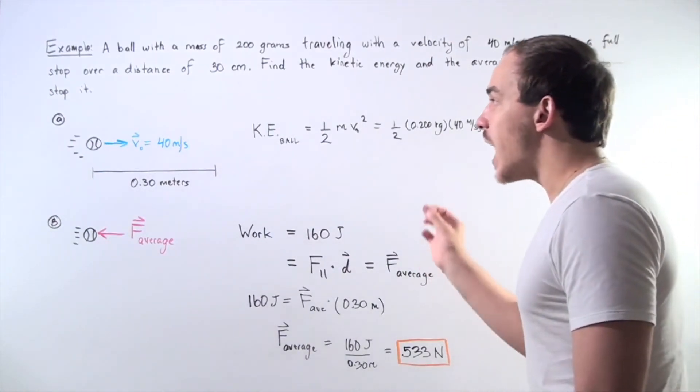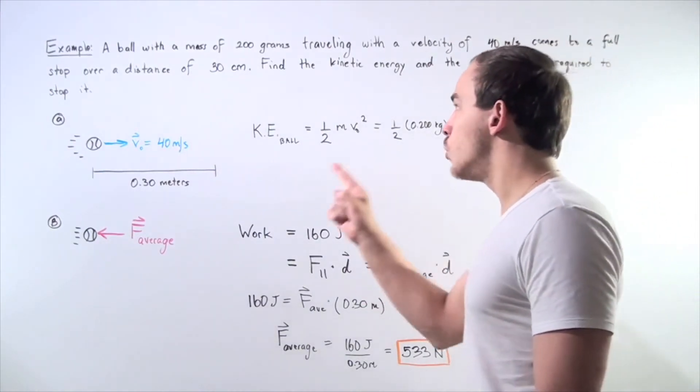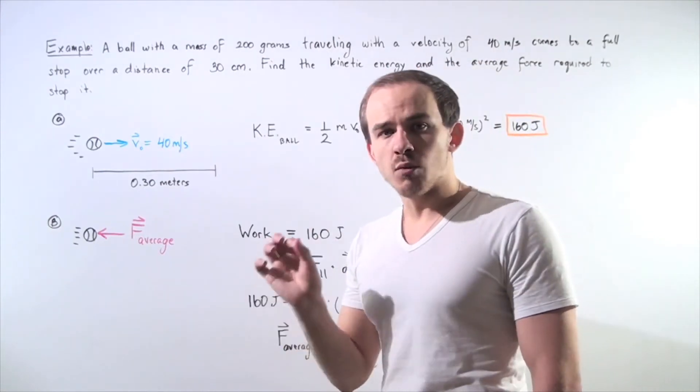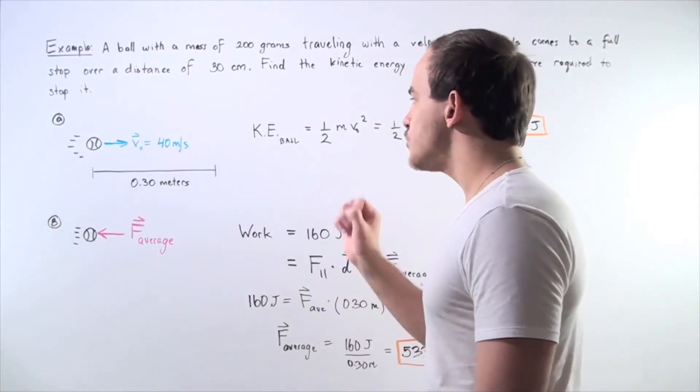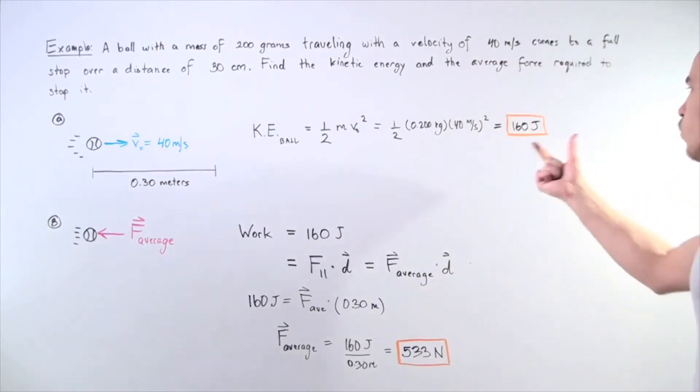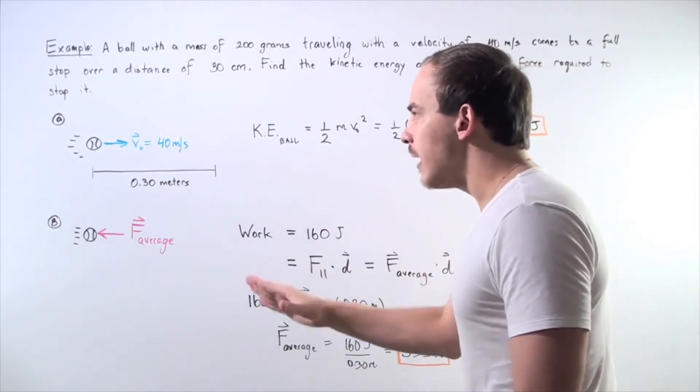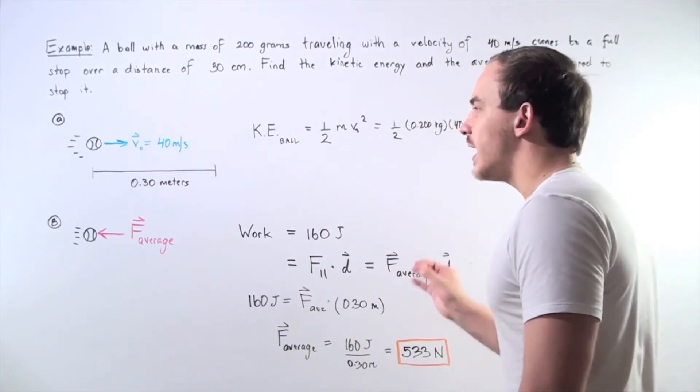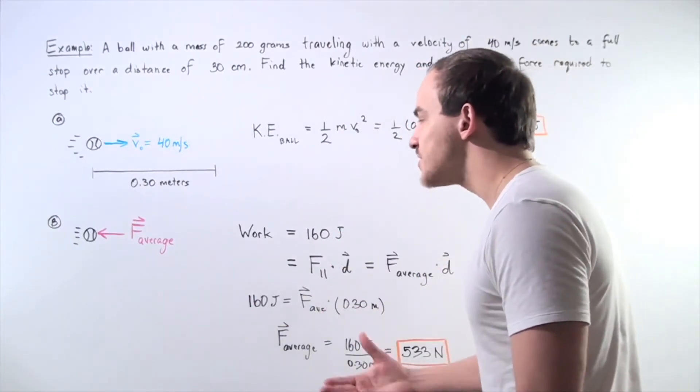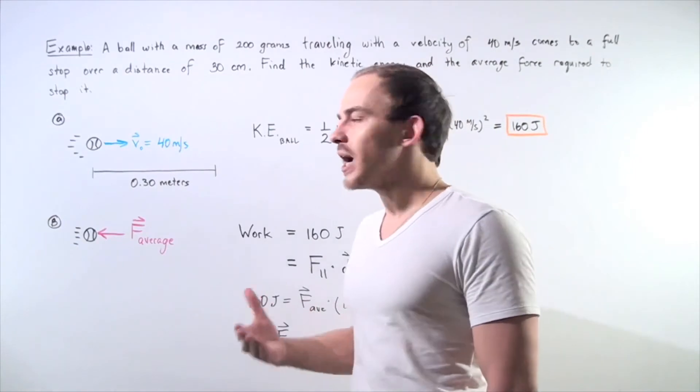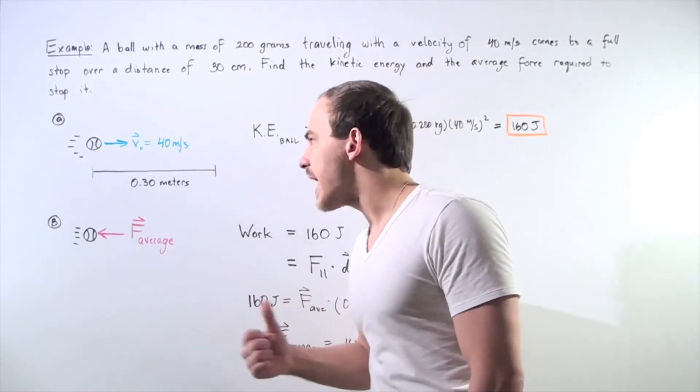Initially when our object has a mass of 200 grams moving with a velocity of 40 meters per second, it has a kinetic energy of 160 joules. Now in order to stop our object, we have to apply a force, an average force, and we have to do work on our object to stop that object.